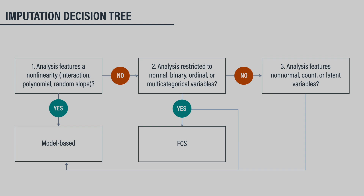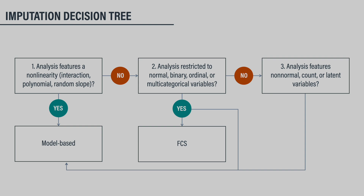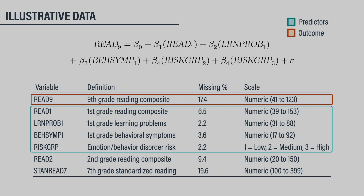One takeaway message is that you can never go wrong by building imputations around a Bayesian analysis that matches the ultimate frequentist analysis. As a quick reminder, the frequentist analysis is a linear regression with a continuous outcome, three continuous predictors, and a three-category nominal predictor, plus second grade broad reading scores and standardized reading test scores from seventh grade as auxiliary variables. Looking at the flowchart, the analysis model does not feature non-linear effects and is comprised entirely of normal and multicategorical variables. As such, either FCS or model-based multiple imputation are appropriate, and there's no reason to expect the procedures to differ.